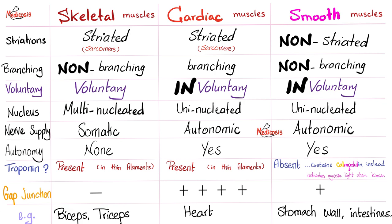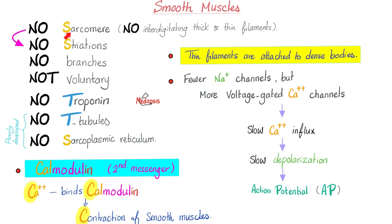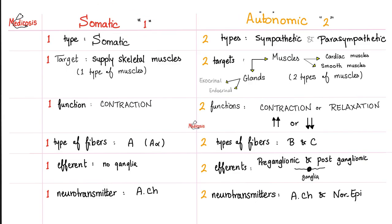Gap junction is absent in skeletal muscles, present in cardiac and smooth muscles, and more abundant in cardiac muscles. Examples of skeletal muscles: biceps, triceps, quadriceps. Cardiac muscle example: your heart. Smooth muscle examples: stomach wall, intestine, vessel wall, uterus, etc. Smooth muscles have no sarcomeres, no striations, no branches, not voluntary, no troponin, no T-tubules, no sarcoplasmic reticulum. But they do have something unique called calmodulin, a calcium-modulating protein. Somatic nervous system is for skeletal muscles; autonomic nervous system is for cardiac and smooth muscles.